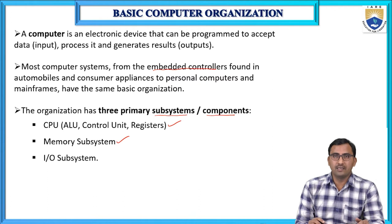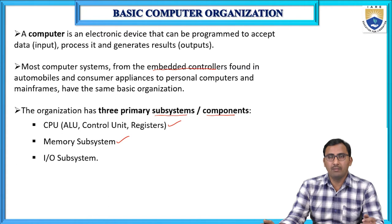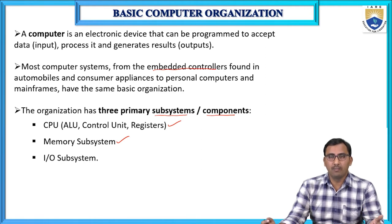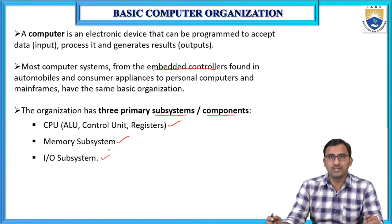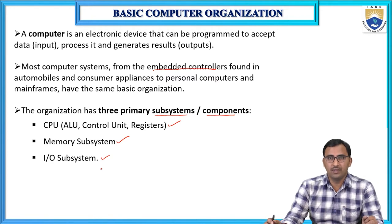After that, the memory subsystem. Memory is used to store programs that are to be executed by the CPU, along with the program's data — because a program contains different variables and some other data. That other data is also stored in the memory subsystem. The third one is the I/O subsystem, which allows the CPU to interact with the outside world using I/O devices. Those are the three main primary subsystems of the basic computer system.